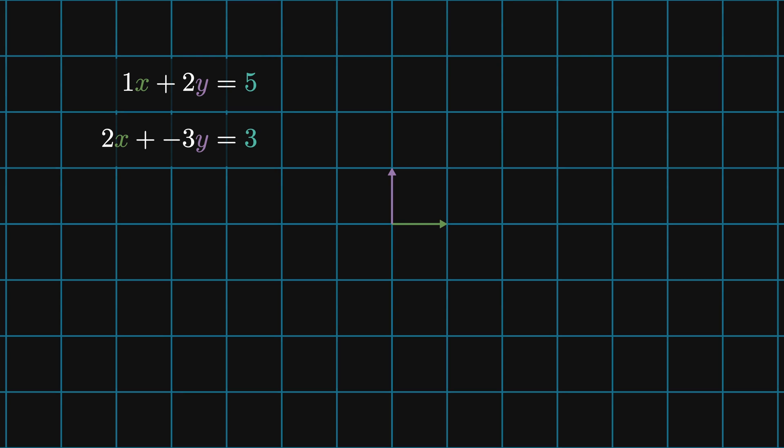Imagine I have a system of linear equations that I want to solve. For this example, let's assume they are x plus 2y equals 5 and 2x minus 3y equals 3. Graphically, I'm looking at two lines and I want to find their intersection.